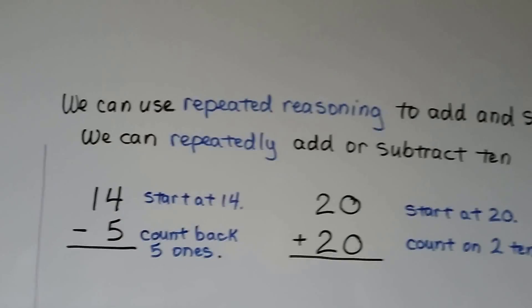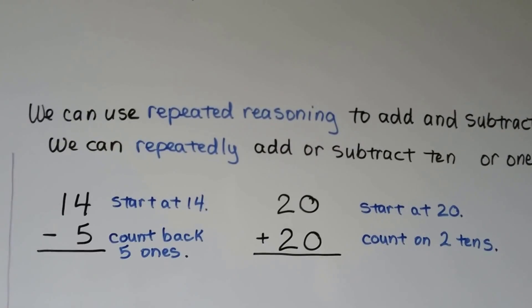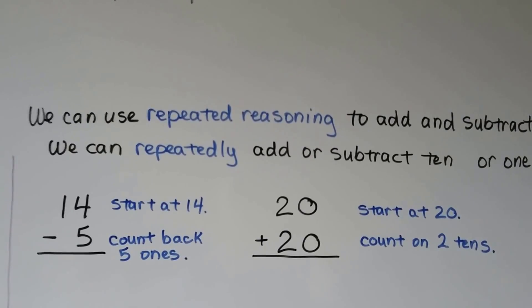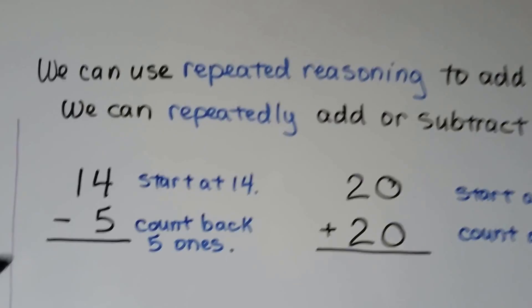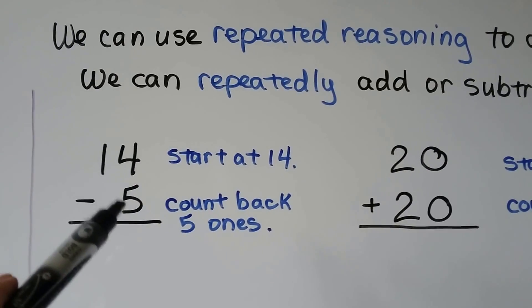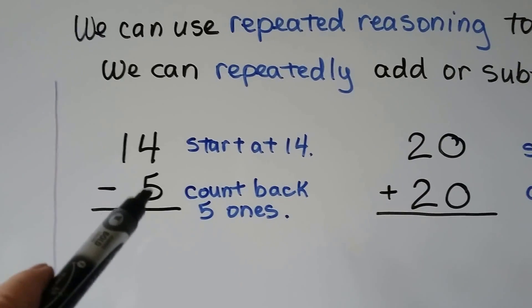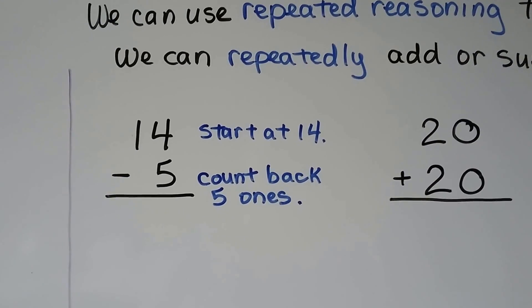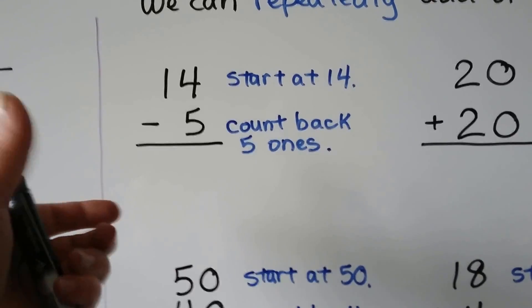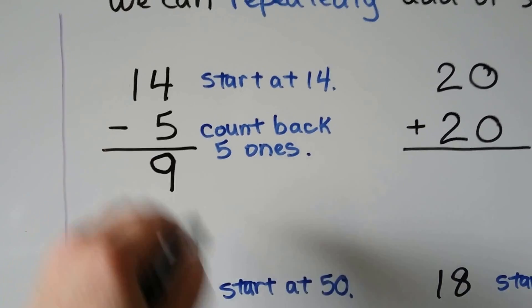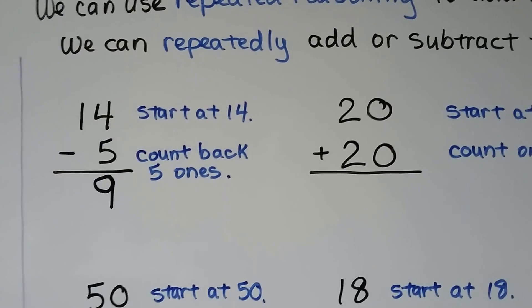We can use repeated reasoning to add and subtract. That means we can repeatedly add or subtract 10 or 1 to find the answer. We can use repeated reasoning and keep subtracting a 1 from this 14 until we've counted back 5 times, 5 1s. 14, 13, 12, 11, 10, 9. We kept subtracting a 1 until we subtracted 5 of them.